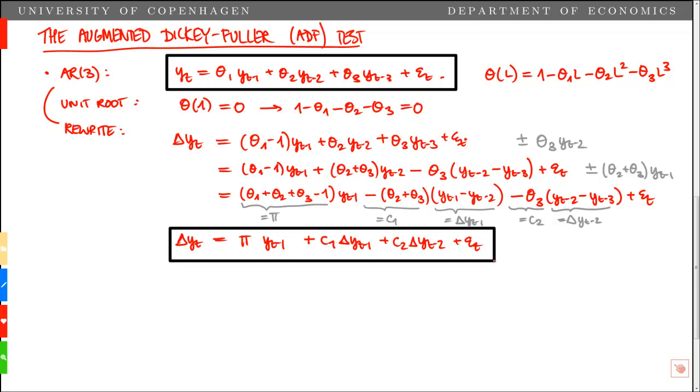Note that this is the same model as before, but written in a different representation. We have a new set of parameters, but we know exactly how the parameters of the original AR(3) model are linked to the representation we have here.